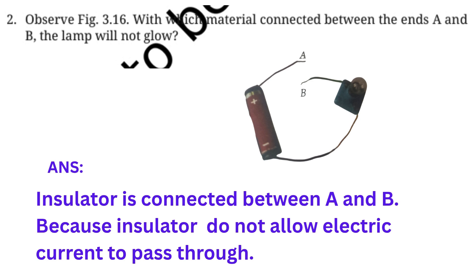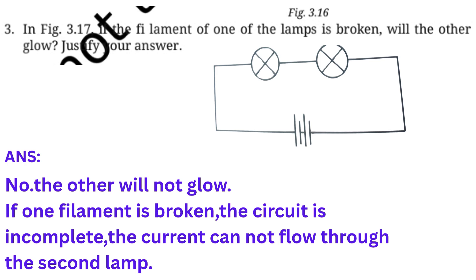Question number two: Observe figure 3.16. With which material connected between ends A and B will the lamp glow? Answer: If an insulator is connected between A and B, the lamp will not glow because an insulator does not allow electric current to pass through.